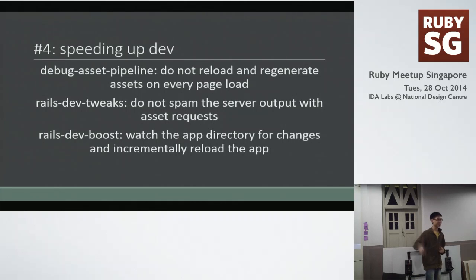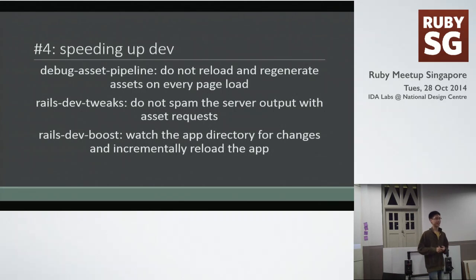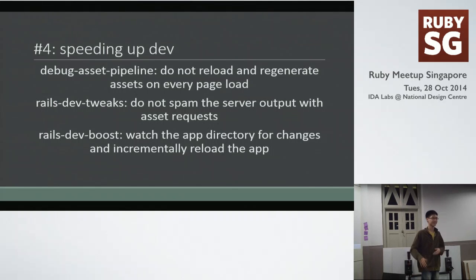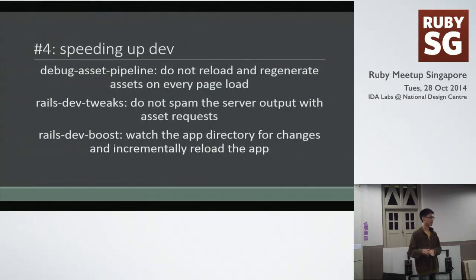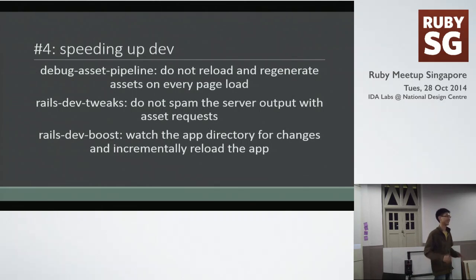Second thing: if you have your Rails server running in the console with assets in debug mode, you get one HTTP request for every single asset. So if you bring in 10 JavaScript files, you see 10 requests in your console — really nasty, it clouds your actual output. What Rails Dev Tweaks does is block all those asset requests, so you can still have debug mode on without your console flooded with text.